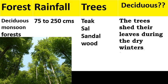The second type is deciduous monsoon forest. This type of forest receives 75 to 250 centimeters of rainfall. Teak, sal, and sandalwood trees are found here. The trees shed their leaves during dry winters, that is in the month of February.